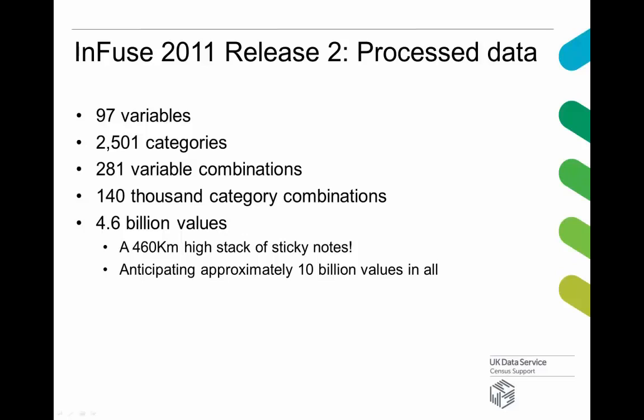The data already available through Infuse has about four and a half billion different values — that's the actual numbers that you see. In an idle moment I worked out that if you wrote each one on a sticky note and stacked them up, you'd get a stack approximately 460 kilometres high — it would reach between Manchester and Belfast if it fell over.